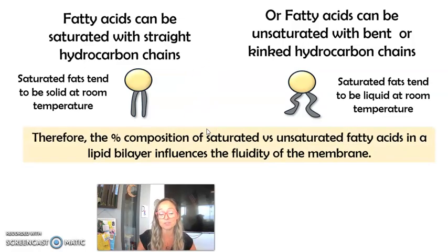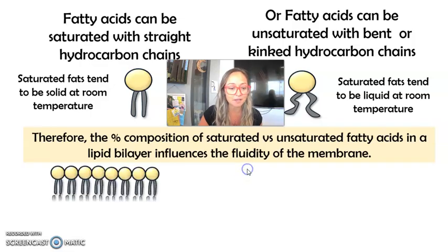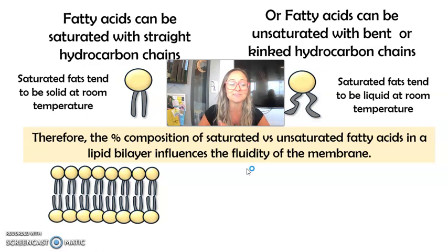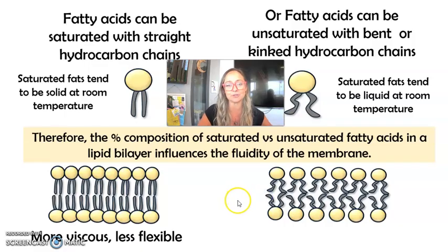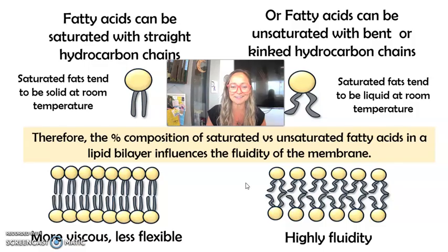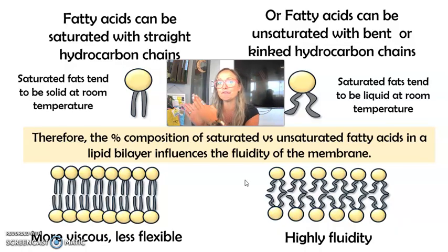The composition — or percent composition — of saturated versus unsaturated fatty acids in the lipid bilayer influences the fluidity of that membrane. Here on the left, we have a cell membrane with a large amount of saturated fatty acids. You can imagine that would be a very viscous, thick, and not very flexible cell membrane. Versus a cell membrane that is all unsaturated fatty acids, which would be very liquidy, kind of like olive oil — highly fluid. Ideally, a membrane should be a mixture of both types of fatty acids to have that fluid mosaic model. We do want our cell membranes to be fluid and flexible; however, too viscous is bad and too fluid is bad.